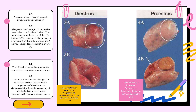In 3A, a corpus luteum at peak progesterone production is shown. In 3B, a large mass of orange tissue can be seen when the CL is sliced in half. The orange color reflects high beta-carotene content. The central cavity indicated by the arrow is a remnant of the follicular antrum. A central cavity does not exist in every CL. In 4A, the circle indicates the approximate area of the regressing corpus luteum. In 4B, the corpus luteum has changed in color and size. The secretory component of the tissue has decreased significantly as a result of luteolysis. The arrow designates a regressing CL from a previous cycle.